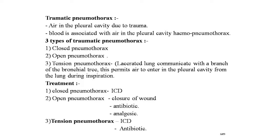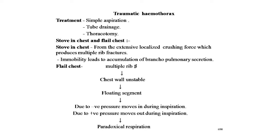Tension pneumothorax: when the lacerated lung communicates with a branch of the bronchial tree, air can enter the pleural cavity during inspiration but cannot escape during expiration as the rent becomes valvular — this condition is called tension pneumothorax. Clinical features of traumatic pneumothorax: dyspnea, pain, shock, and cyanosis. Treatment: closed pneumothorax — ICD; open pneumothorax — closure of wound, antibiotics, and analgesics; tension pneumothorax — requires immediate ICD and surgical intervention as the condition is fatal. A wide-bore needle is inserted into the pleural cavity through the second intercostal space, one and a half inches lateral to the sternum to avoid injury to the internal mammary artery. Antibiotics should be started.